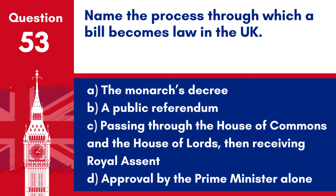Question 53. Name the process through which a bill becomes law in the UK. a. The monarch's decree. b. A public referendum. c. Passing through the House of Commons and the House of Lords, then receiving royal assent. d. Approval by the Prime Minister alone.